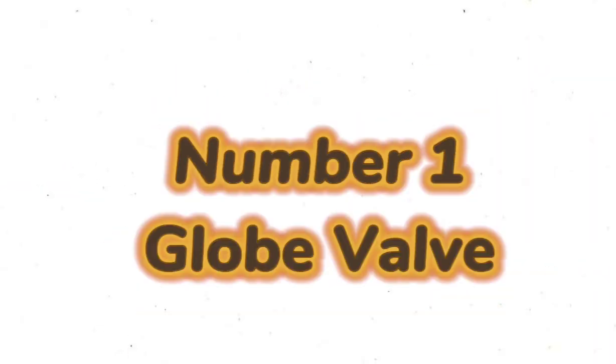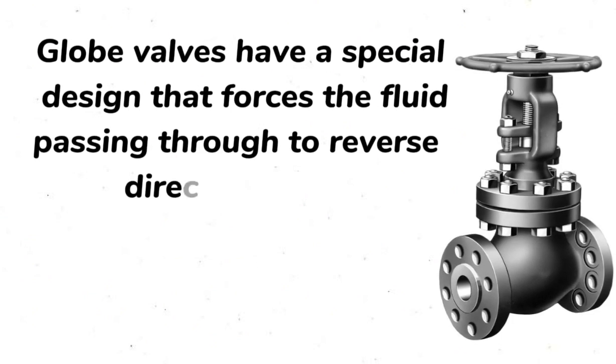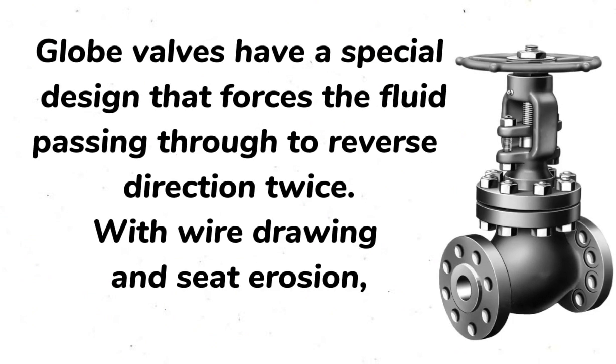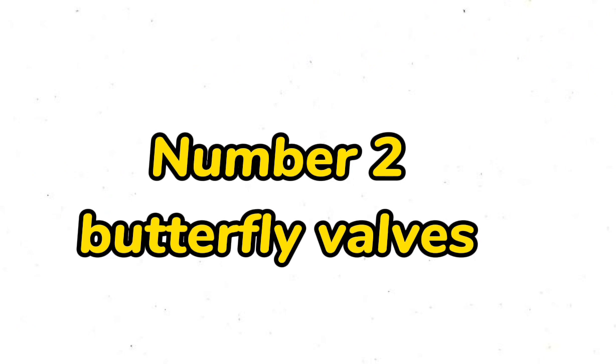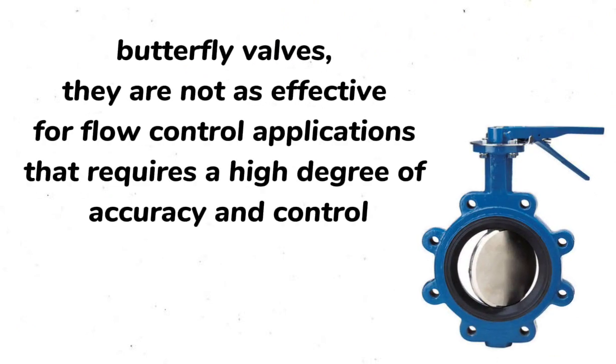Control valves types and working. Number one: globe valves. Globe valves have a special design that forces the fluid passing through to reverse direction twice, with wire drawing and seat erosion.